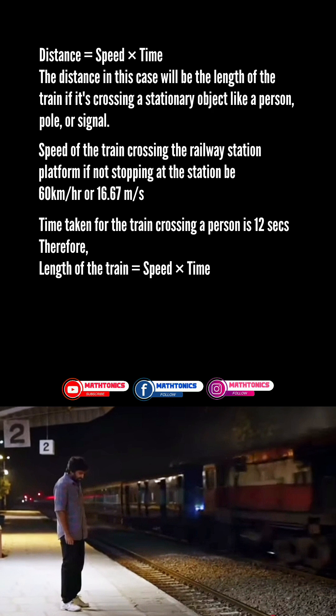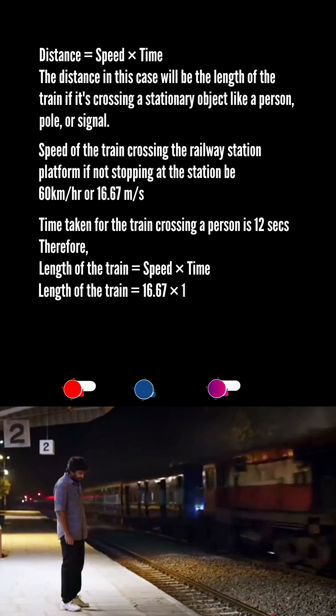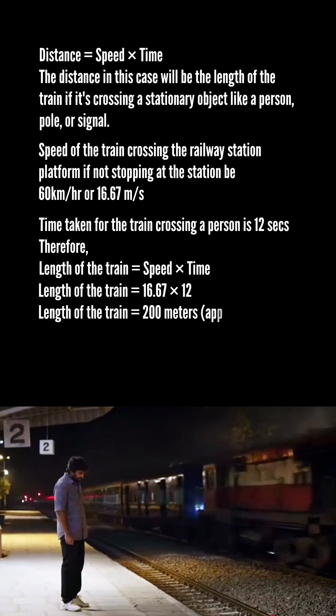Therefore, length of the train equals speed into time: 16.67 into 12 is equal to 200 meters approximately.